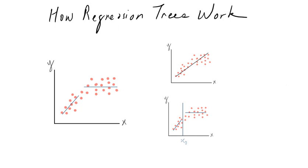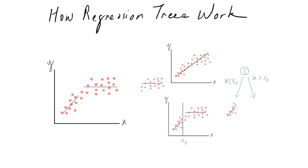To represent the model we use a graph representation. In the first node, the split is along x less than or equal to x₀, and from there the regression model that we use would be this regression model, whereas the data greater than x₀ will be modeled using this other regression line instead.